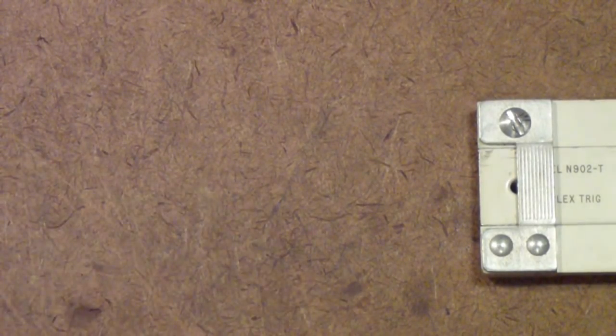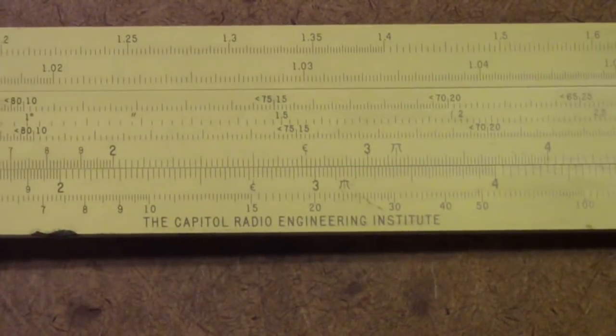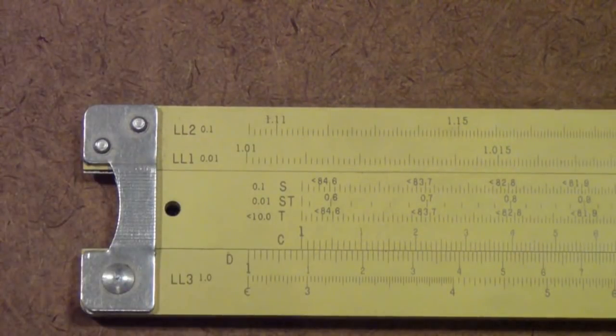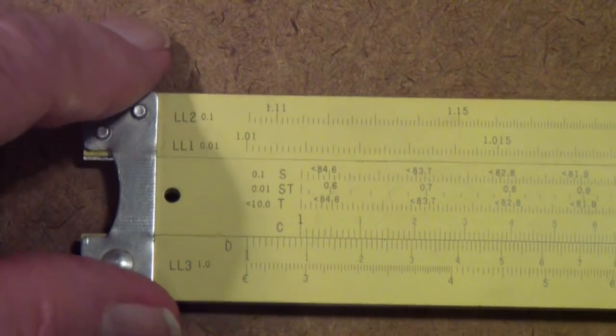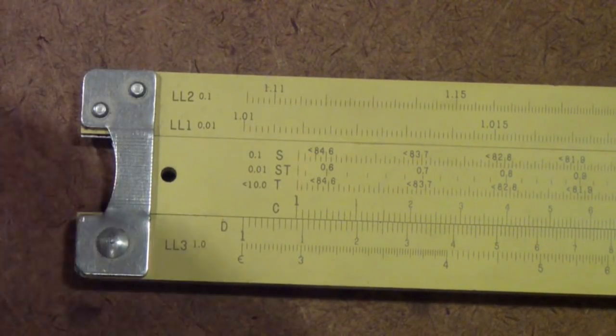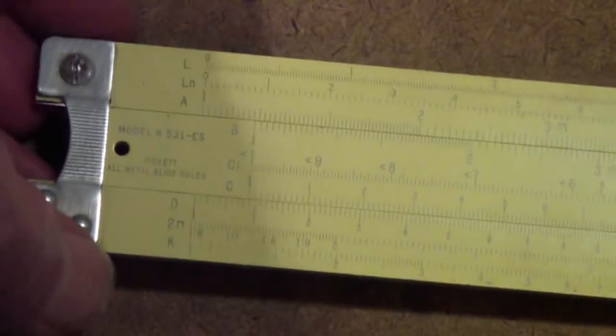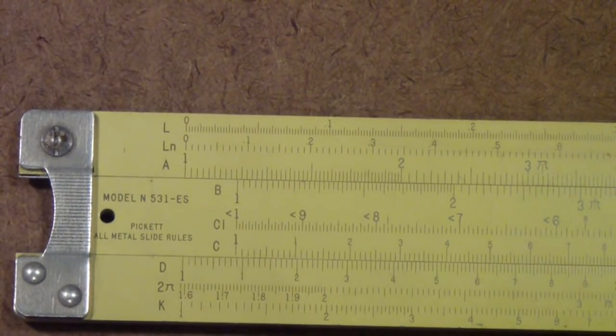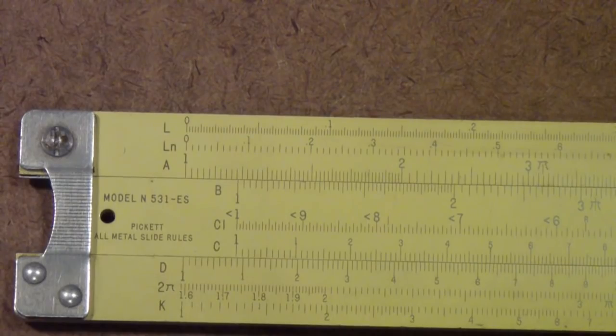I just showed you a specialty rule. This one is one that was made for the Capital Radio Engineering Institute. And, it also is a specialty rule that has impedance and so on. This is the N531ES, or Eye Saver. Pickett made a lot of these specialty rules. In fact, in their catalog, they even told you how to contact at the factory if you wanted something, even just promotional rules or things of that sort.